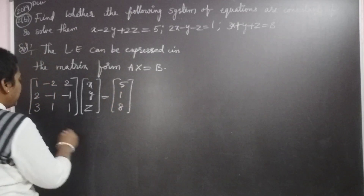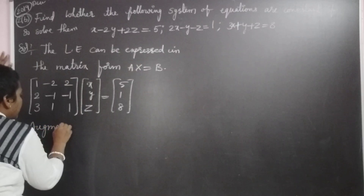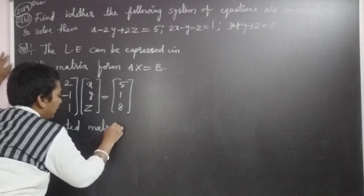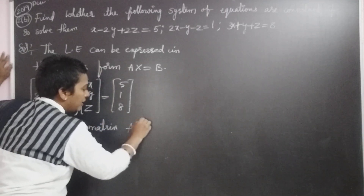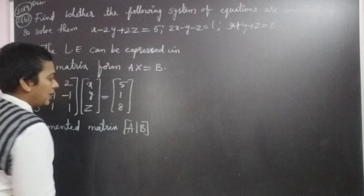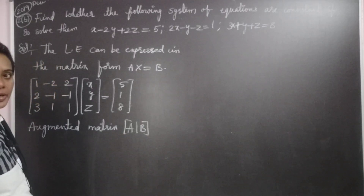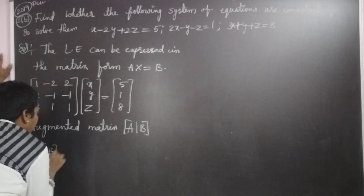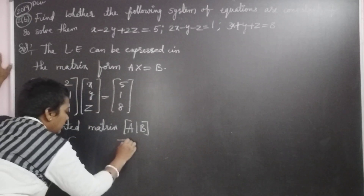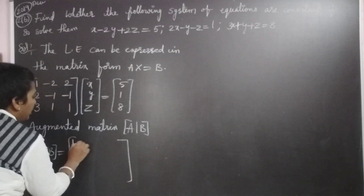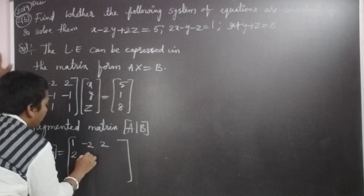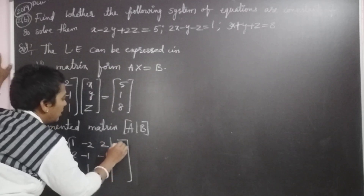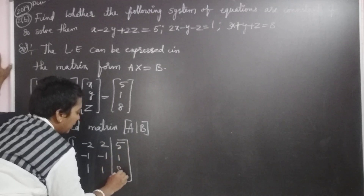Now we take the augmented matrix. The augmented matrix is the combination of A and B, written as [A|B] with B as the last column. The augmented matrix [A|B] is: 1, −2, 2, 5; 2, 2, −1, 1; −1, 3, 1, 8.